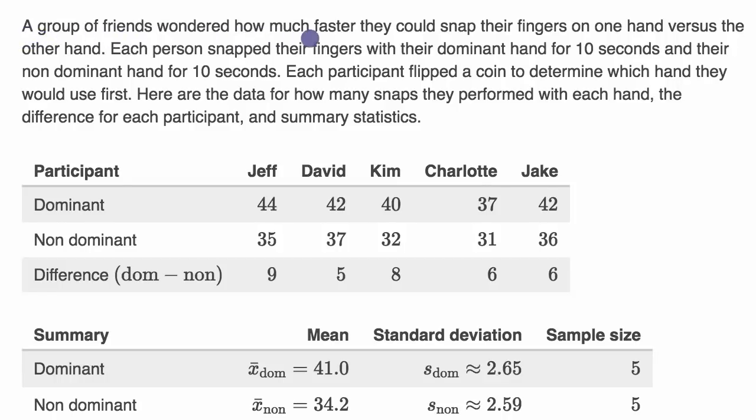A group of friends wondered how much faster they could snap their fingers on one hand versus the other hand. Very important question in life. Each person snapped their fingers with their dominant hand for 10 seconds and their non-dominant hand for 10 seconds. Where if you're right-handed, right hand would be your dominant hand. If you were left-handed, left hand would be your dominant hand.